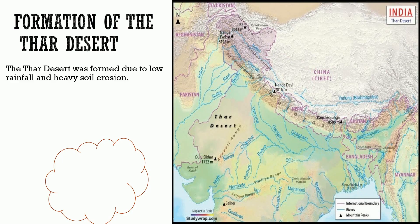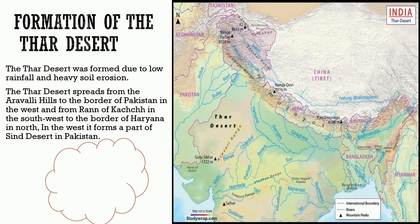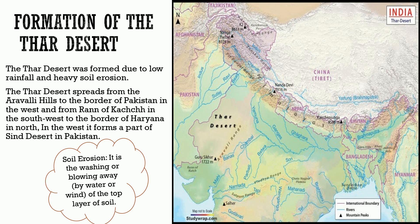Formation of the Thar Desert: The Thar Desert was formed due to low rainfall and heavy soil erosion. It spreads from the Aravalli Hills to the border of Pakistan in the west, and from the Rann of Kutch in the southwest to the border of Haryana in the north. In the west, it forms a part of the Sind Desert in Pakistan. Soil erosion is the washing or blowing away by water or wind of the top layer of soil.